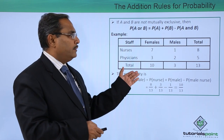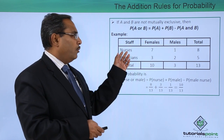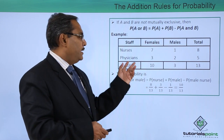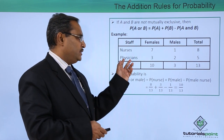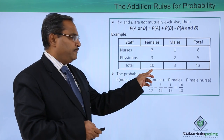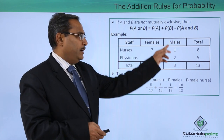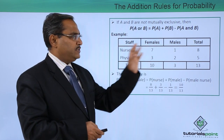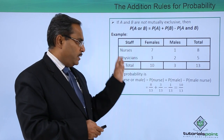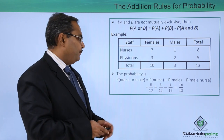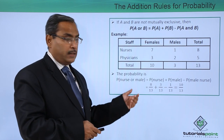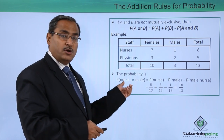Here we have one respective table. Out of eight nurses, we have seven female and one male. Out of five physicians, we have three female physicians and two male physicians. We can find how many female staffs there are, how many male staffs, how many nurses, how many physicians — the calculations have been done, and this is the total number of staffs considered. Now, the probability is nurse or male.